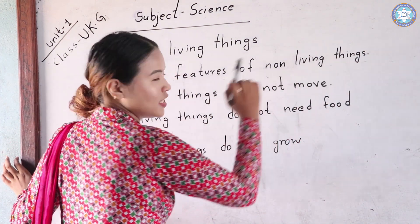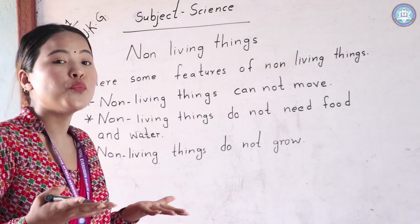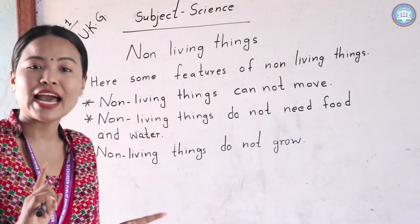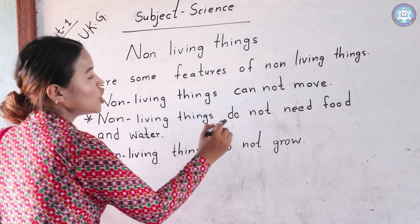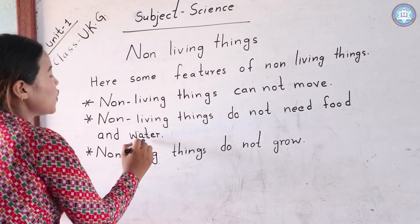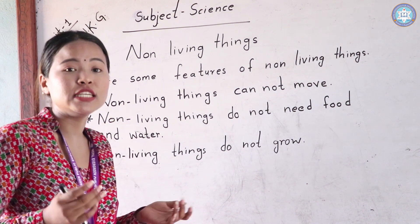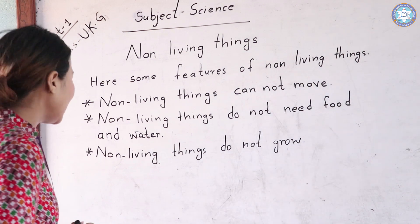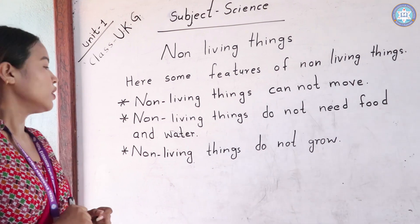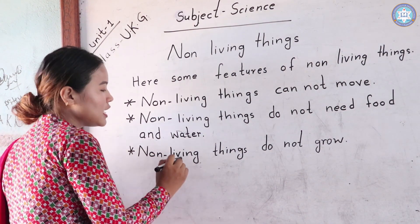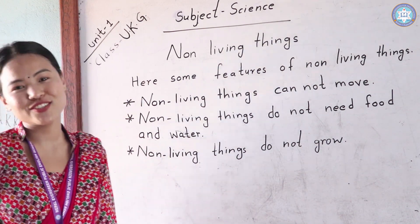Now we are going to learn about the features of non-living things. Non-living things cannot move. Non-living things do not need food and water. Non-living things do not grow. Okay, do you understand? Thank you, students.